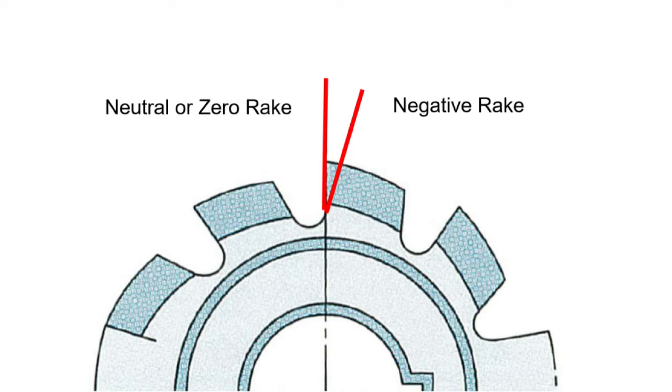Depending on the specific gear parameters, this hob rake angle is usually between minus 15 and minus 30 degrees. A neutral or zero rake angle hob can be used due to the excellent machine rigidity, but this can improve the tool life.